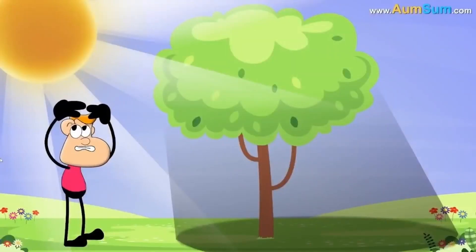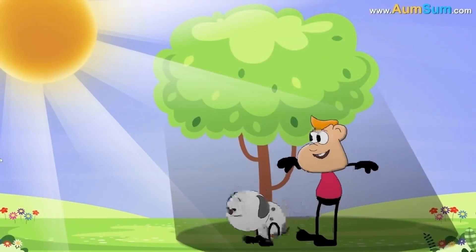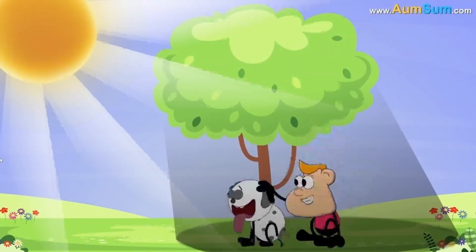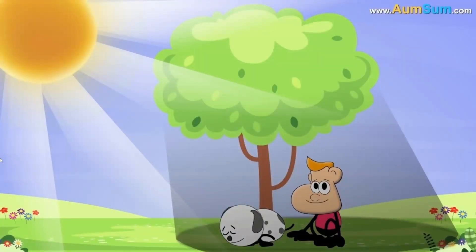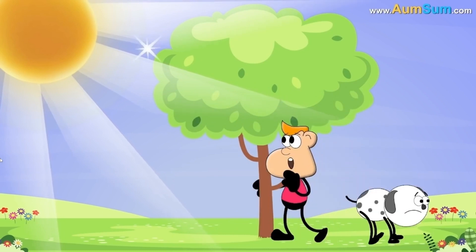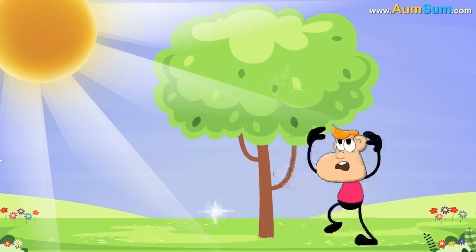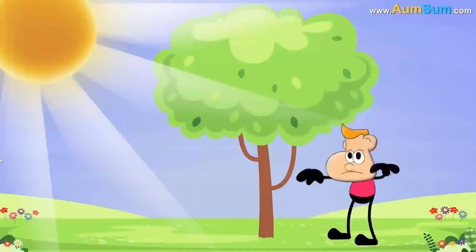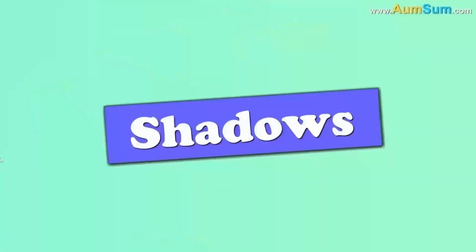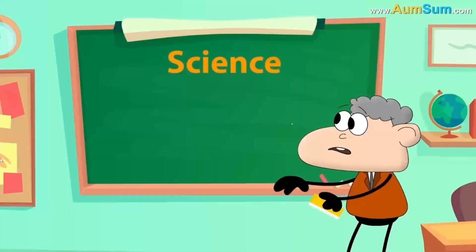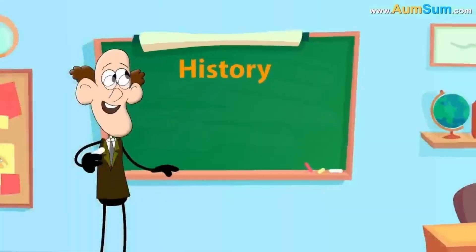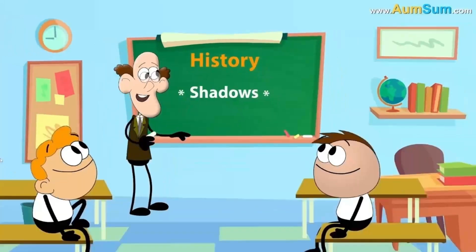Thirdly, if shadows disappeared, solar or lunar eclipses will not occur anymore, and stars and planets will get extremely confused. Fourthly, humans as well as animals usually rest under a tree in order to escape from the sun's blistering heat — if shadows disappeared, it will not be easy to avoid the sun's heat anymore. Lastly, if shadows disappeared, science teachers may have to remove this topic, while history teachers may include it in their teaching.